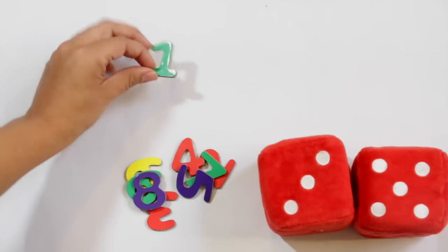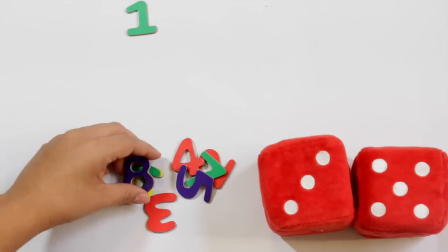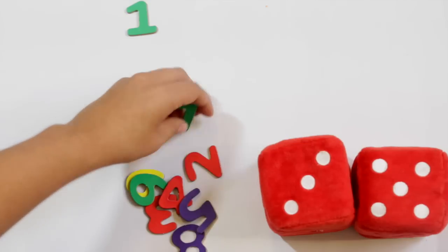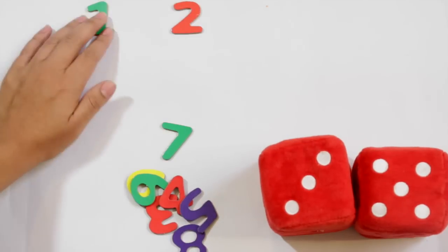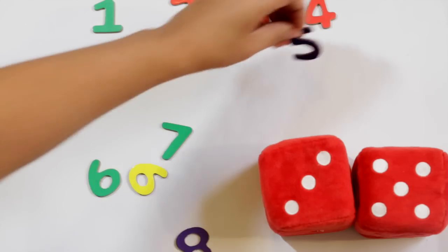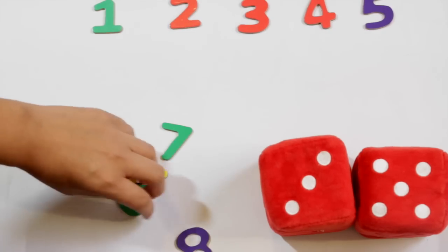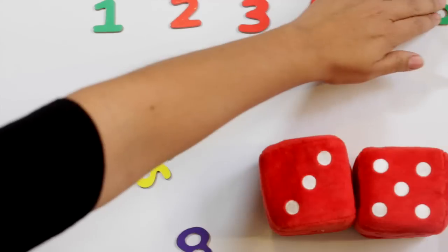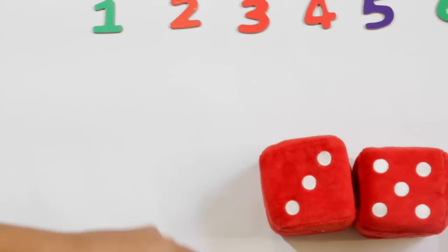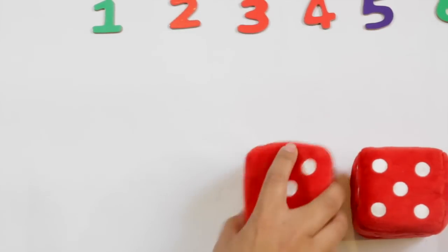So I also have these little number magnets, once again another dollar store purchase. You can use these by placing them out as such, and of course I'm going to use numbers one through six initially. I'm going to take away one of these and...